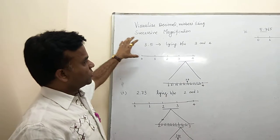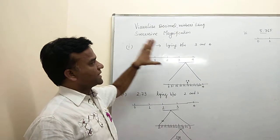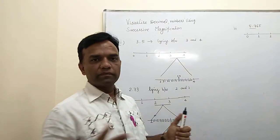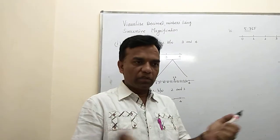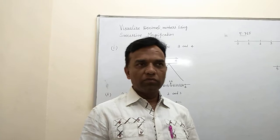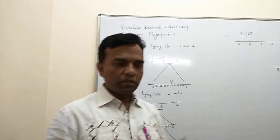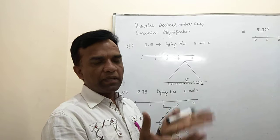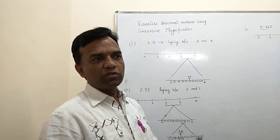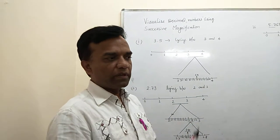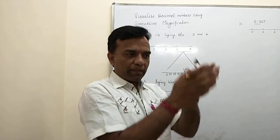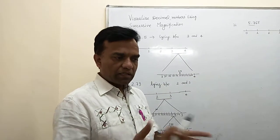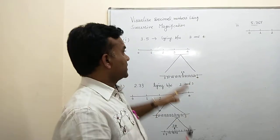Visualize decimal numbers using successive magnification. It means you represent decimal numbers on the number line, and then you visualize a given decimal number with the help of successive magnification. Magnification means you take the number, enlarge it, then again enlarge, and again enlarge until you get the result.